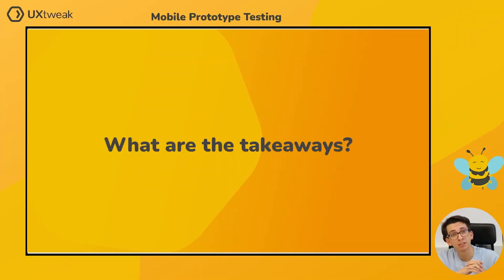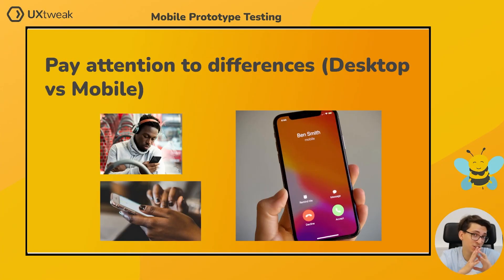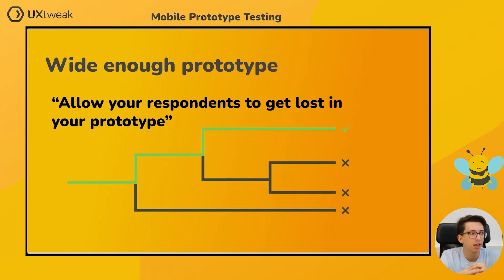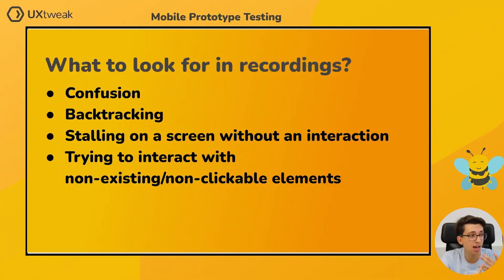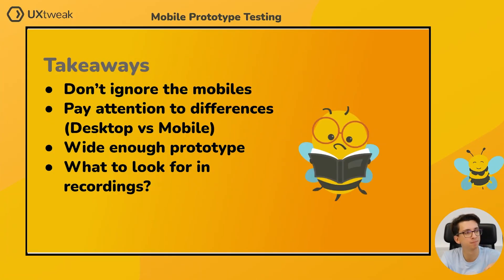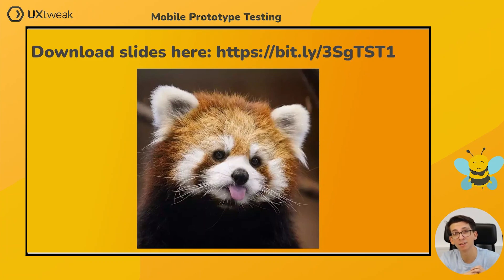With the screen recording analysis done, here are the key takeaways. Please don't ignore mobile — pay attention to the differences because it is not just a small website. Make your prototype wide enough to allow your respondents to explore and potentially get lost. When analyzing recordings, look for confusion, backtracking (as seen in task three), stalling on a screen without interaction (seen in task two), and trying to interact with non-existent clickable elements (seen in task one). You can download the slides from this webinar at the provided link, and the prototype link is available in the description. Thank you for your time, and have a nice rest of the day!